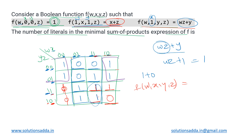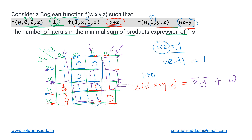We identify three groups of four min-terms each. There is no benefit to including the don't-care terms since we cannot form a group of size eight. For the first group of four, the common term from the column is x̄ and from the row is ȳ, giving x̄ȳ. For the second group of four, the common column term is w and the common row term is z, giving wz.